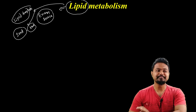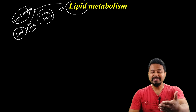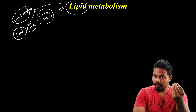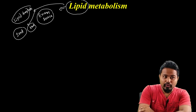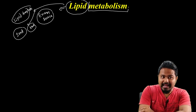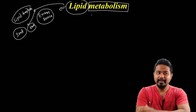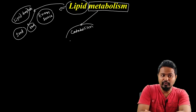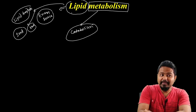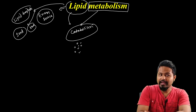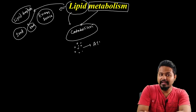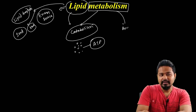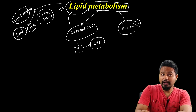Lipids can be classified mainly into two pathways: synthesis and breakdown. Metabolism involves both anabolism and catabolism. In catabolism, lipids are broken down to produce ATP energy. In anabolism, lipids are synthesized.